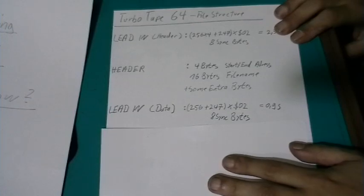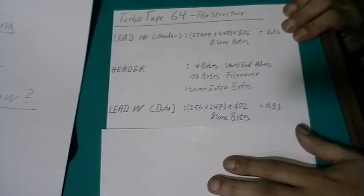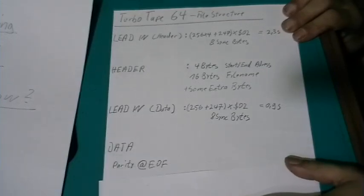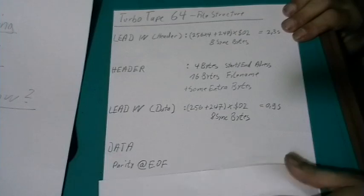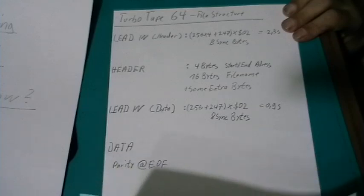After that we have the lead in for the data. It's 256 plus 247 times hexadecimal 02 byte, which will last about 0.9 seconds, followed by 8 sync bytes. After that we have a data and a parity at a file to detect if the data was loaded correctly. And that's all.